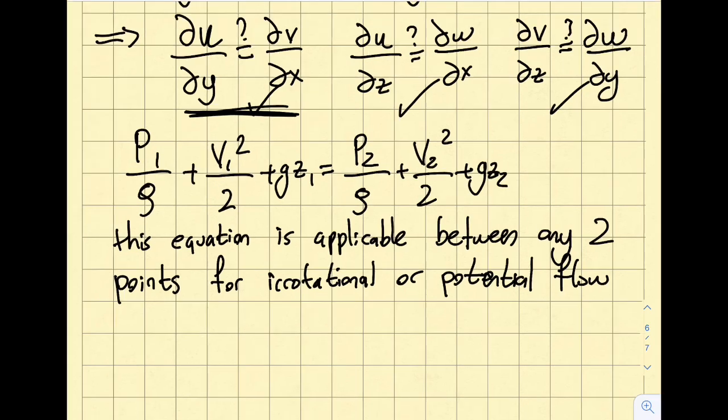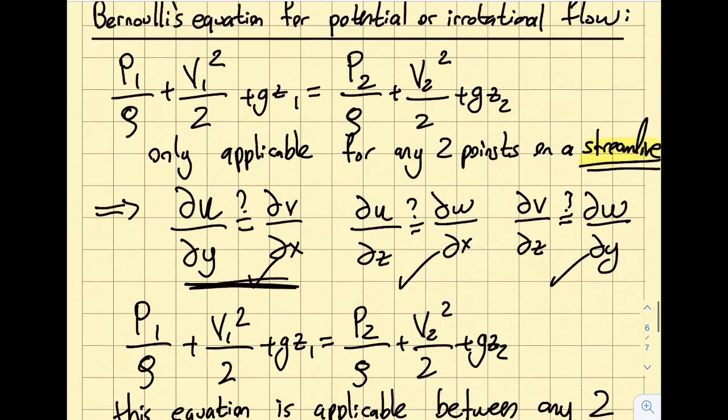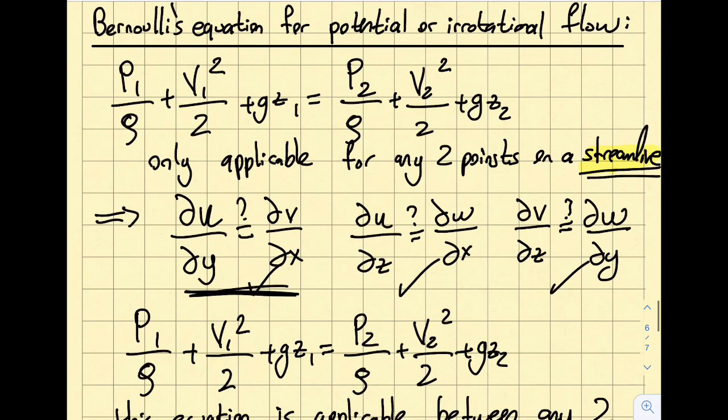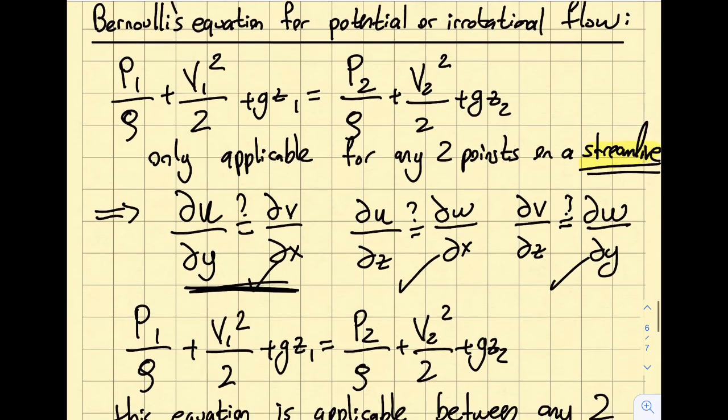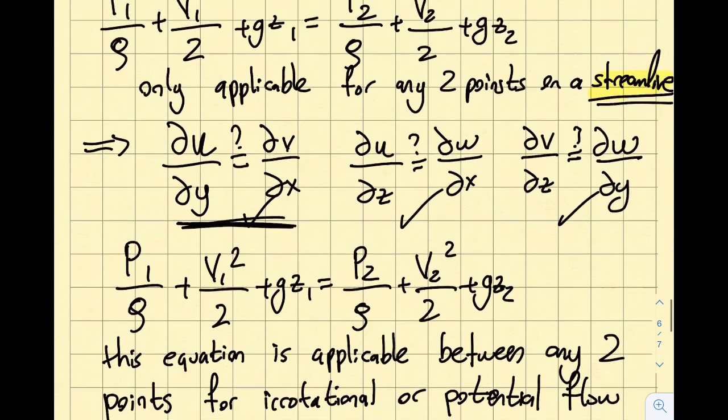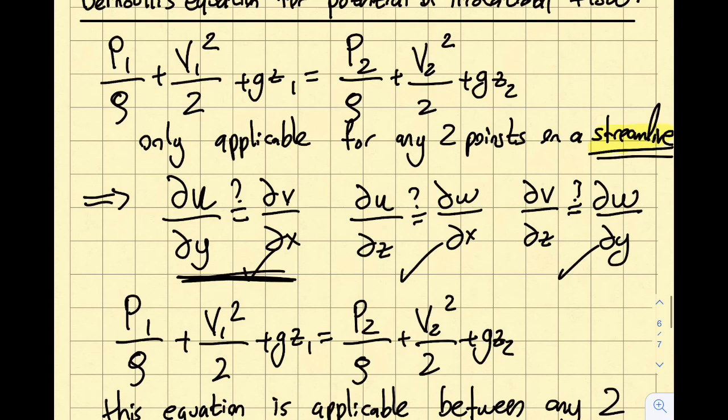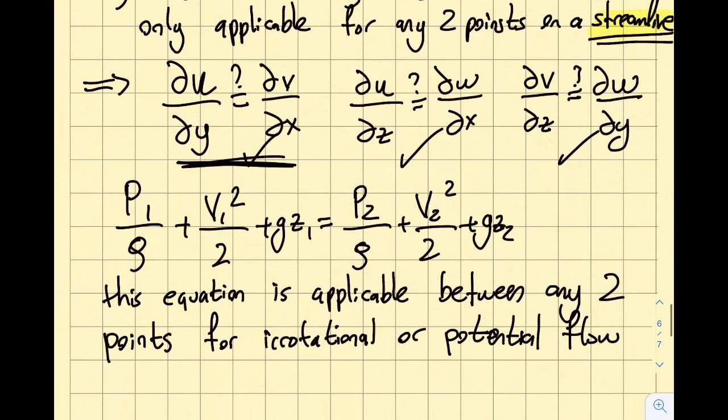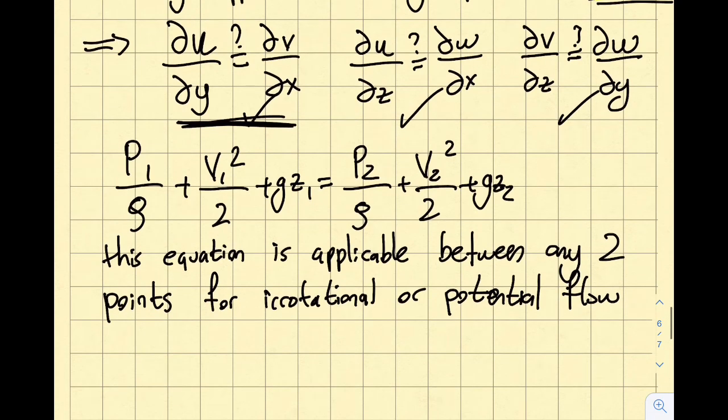The key here is that I have to be really careful that I'm doing this for conservation of energy. I have to make sure that this is a potential or irrotational flow. As long as that is satisfied, I can equate this equation for any two points in my flow.